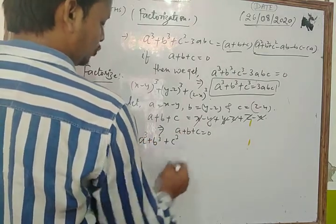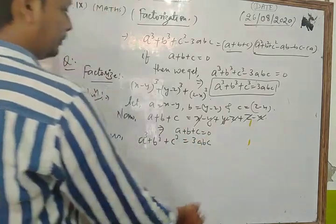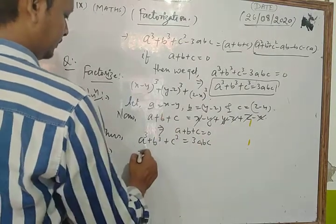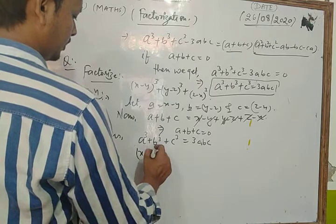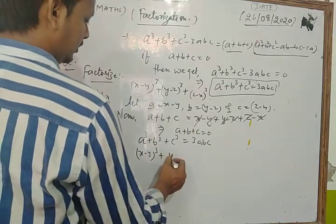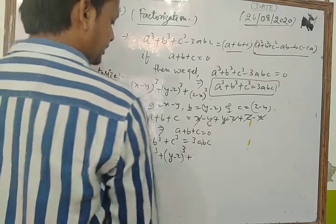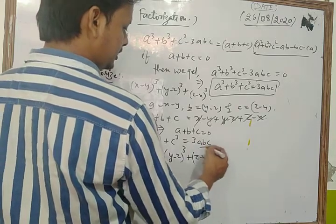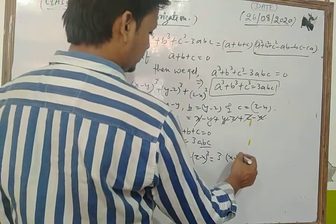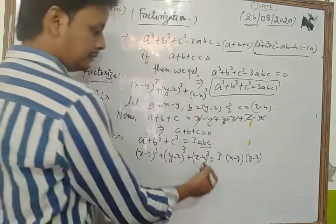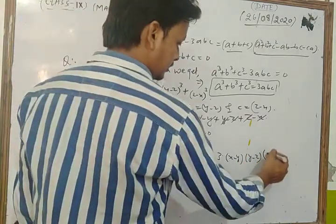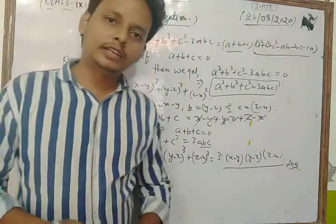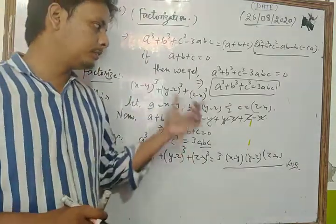Since a + b + c = 0, we can write a³ + b³ + c³ = 3abc. So (x - y)³ + (y - z)³ + (z - x)³ = 3(x - y)(y - z)(z - x). This is our required answer.